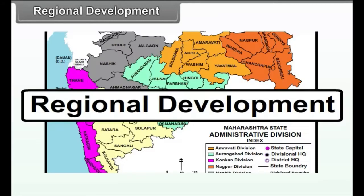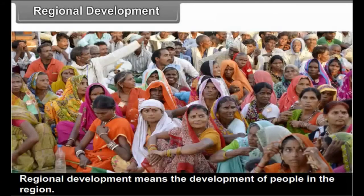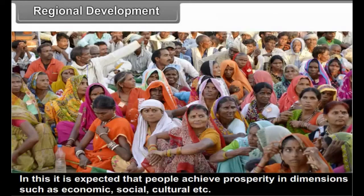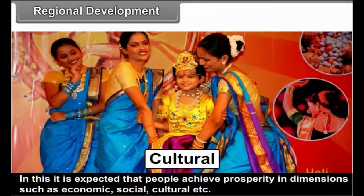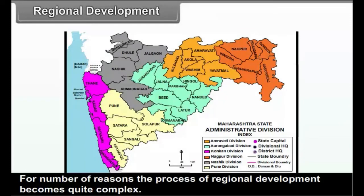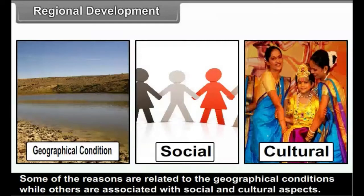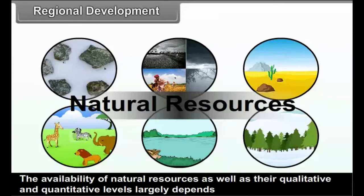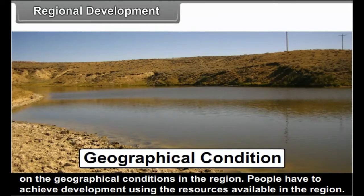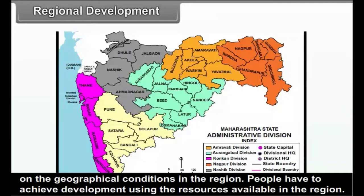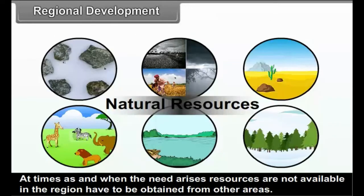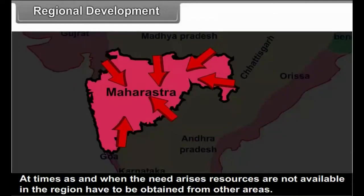8.2 Regional Development means the development of people in the region. It is expected that people achieve prosperity in dimensions such as economic, social, cultural, etc. For a number of reasons, the process of regional development becomes quite complex. Some reasons are related to geographical conditions, while others are associated with social and cultural aspects. The availability of natural resources, as well as their qualitative and quantitative levels, largely depend on geographical conditions. People have to achieve development using the resources available in the region, and at times, resources not available in the region have to be obtained from other areas.